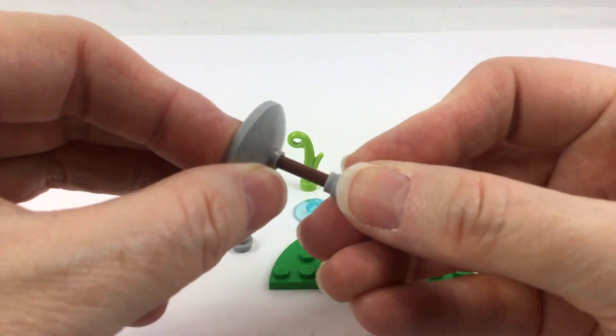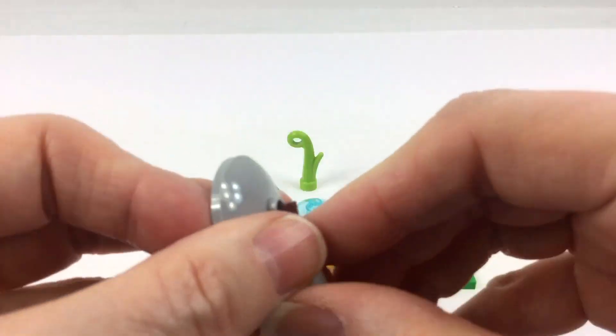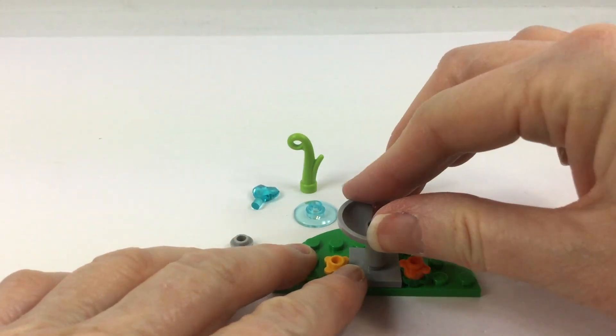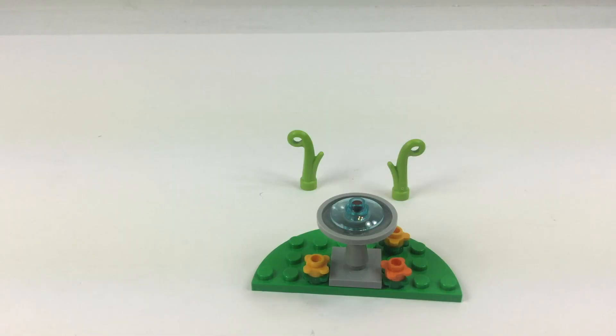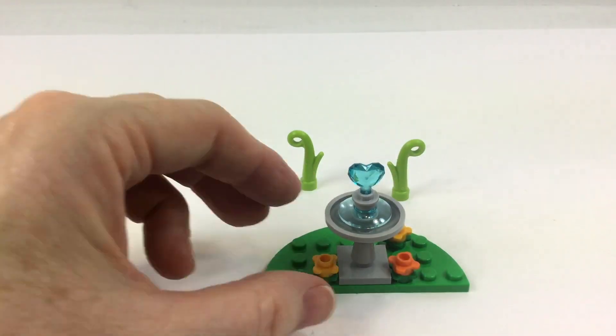Now we're going to build this really cute little water fountain. Each part of this set has some really cute things that you could add to any existing sets that you already have and make them more interesting. But as a whole, this whole set works awesome together.